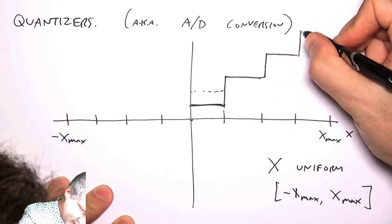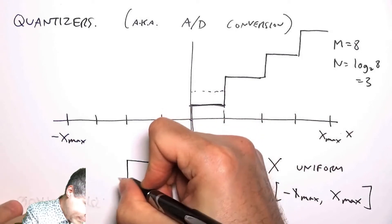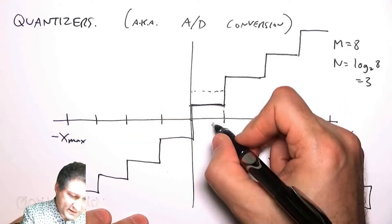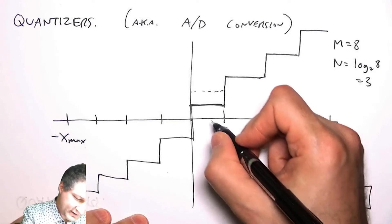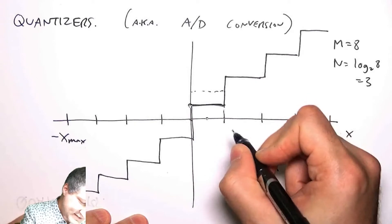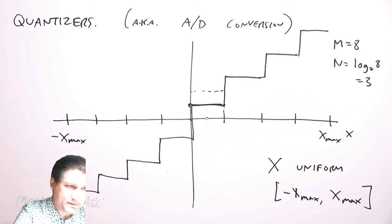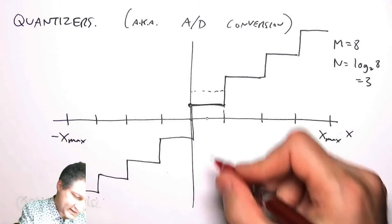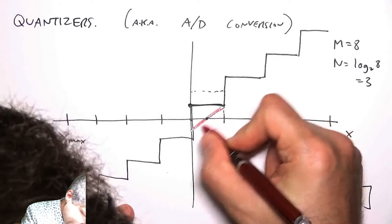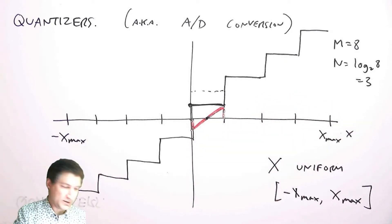And what is the error that's happening inside each interval? Basically what I'm doing is I'm quantizing to the mean of the interval, so the error inside that interval looks like this: I'm right on target in the middle and I have a high error at the ends and a low error in the middle.